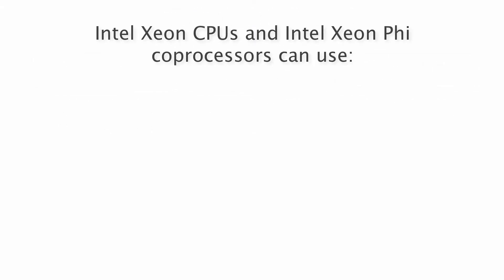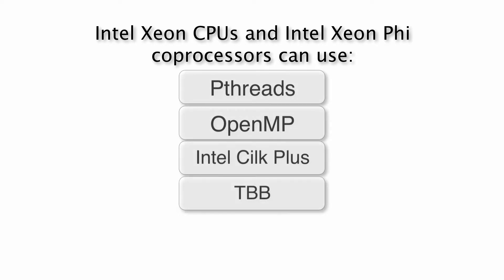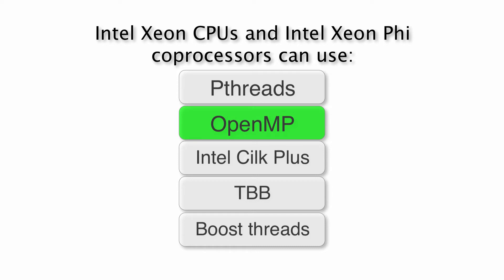For Intel Xeon processors and Intel Xeon Phi coprocessors, supported multi-threading frameworks are numerous and include pthreads, OpenMP, Intel Cilk+, Intel Thread Building Blocks (TBB), Boost threads, and many others. In this course we will discuss one of the most popular, standardized, and actively supported frameworks: OpenMP.